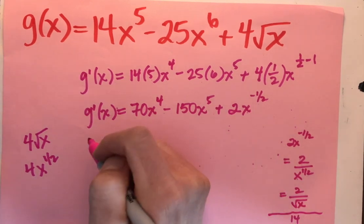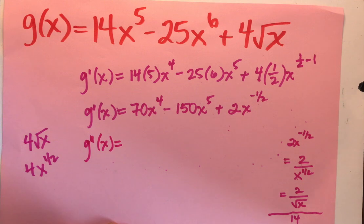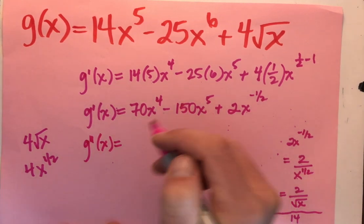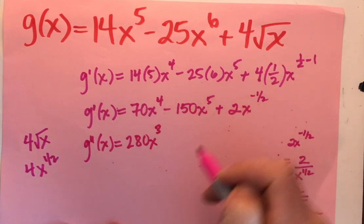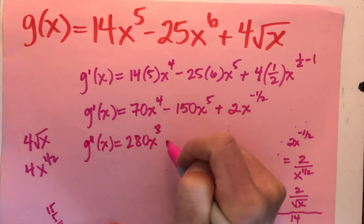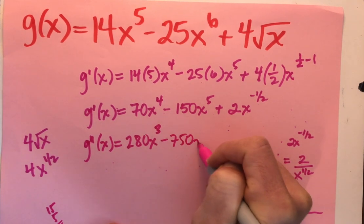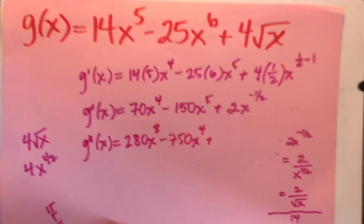So let's just practice this one more time. Let's take one more derivative, g double prime of x. So I've got 70 times 4, so that's going to give me 280 x to the 3rd, 5 times the 150, let's see, minus 750 x to the 4th. Now let's write this one out.